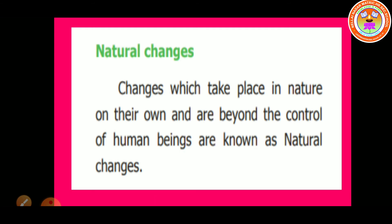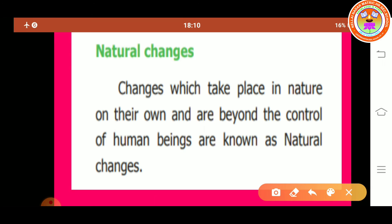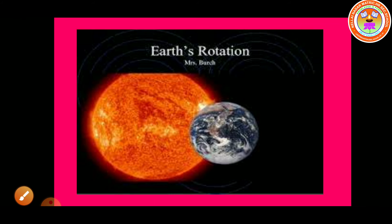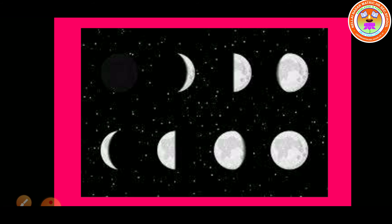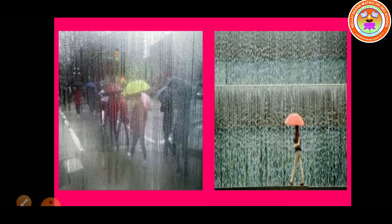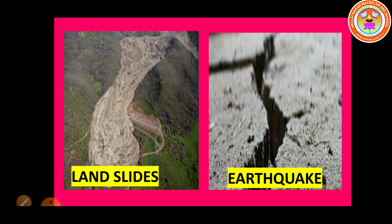Next type of change is natural and human-made change. First, we discuss natural change. Changes which take place in nature on their own and are beyond the control of human beings — that type of change is called natural changes. For example, rotation of the earth, changing phases of the moon, rain, landslides, earthquake. These are the examples of natural changes.